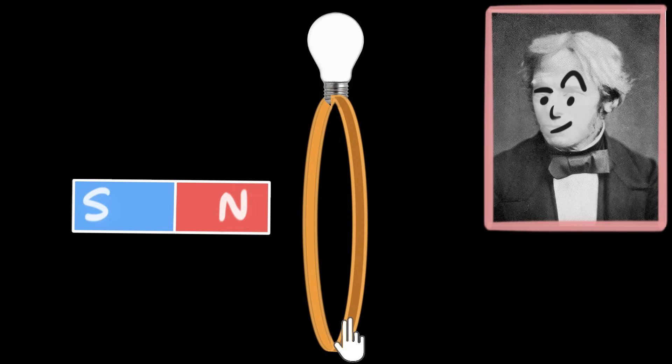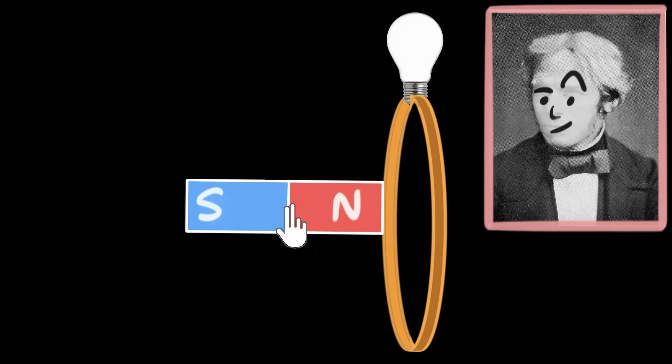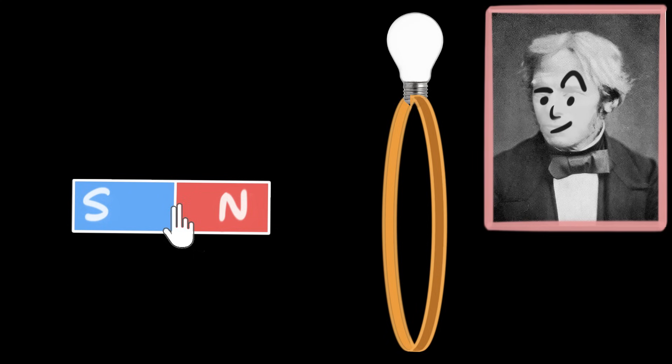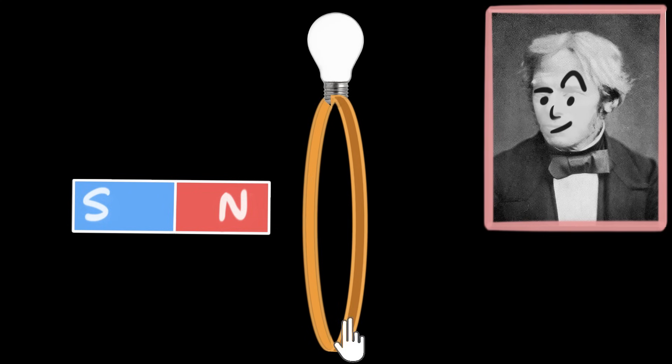And bingo! There we have it. Again, we saw a flash of light when the coil was moving. So this means whether it's the coil or the magnet, one of them have to move and during the motion, we are getting electricity.